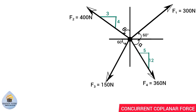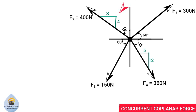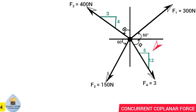We are given slopes acting on each force in its quadrant. The slope along the 400 newton (F2) force is 3 over 4, and the other slope along the F4 force is also given. So let's start — the first thing we'll do is calculate for theta and alpha.